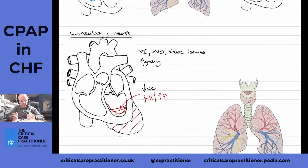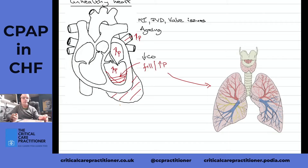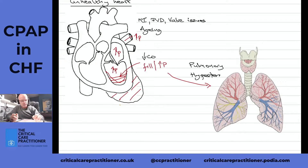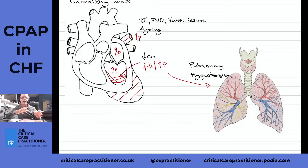What impact does this have? This rise in pressure will start to back up until eventually it's backing up into the lungs — remember, that's where the blood is coming from. As a consequence, you get something called pulmonary hypertension, meaning the pressures in the pulmonary circulation are much higher than you'd want them to be. This is an issue for patients suffering with congestive heart failure because of the role of fluid within the lungs and the things that drive fluid across the membrane.